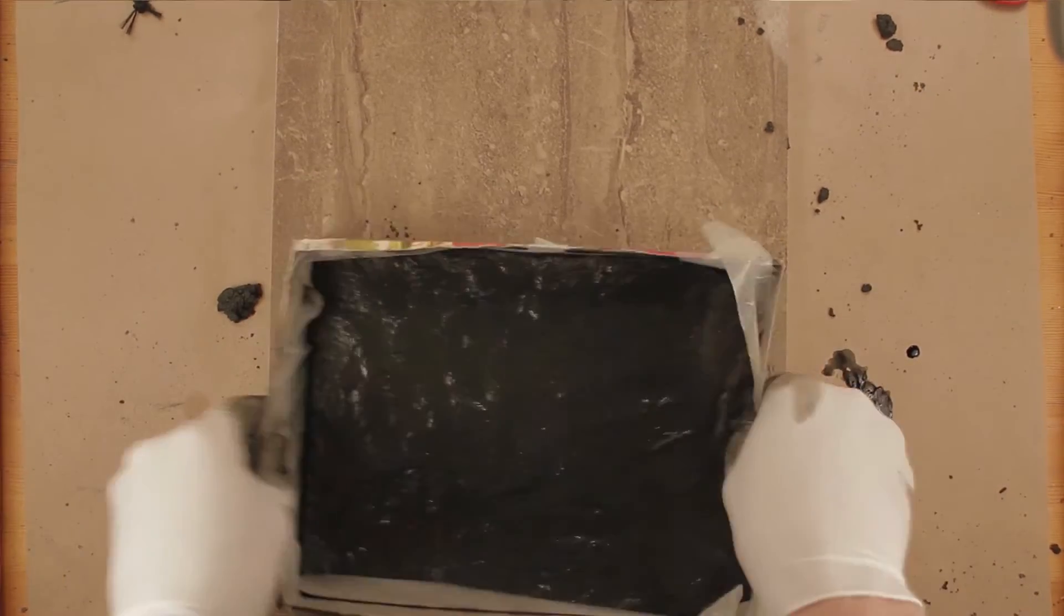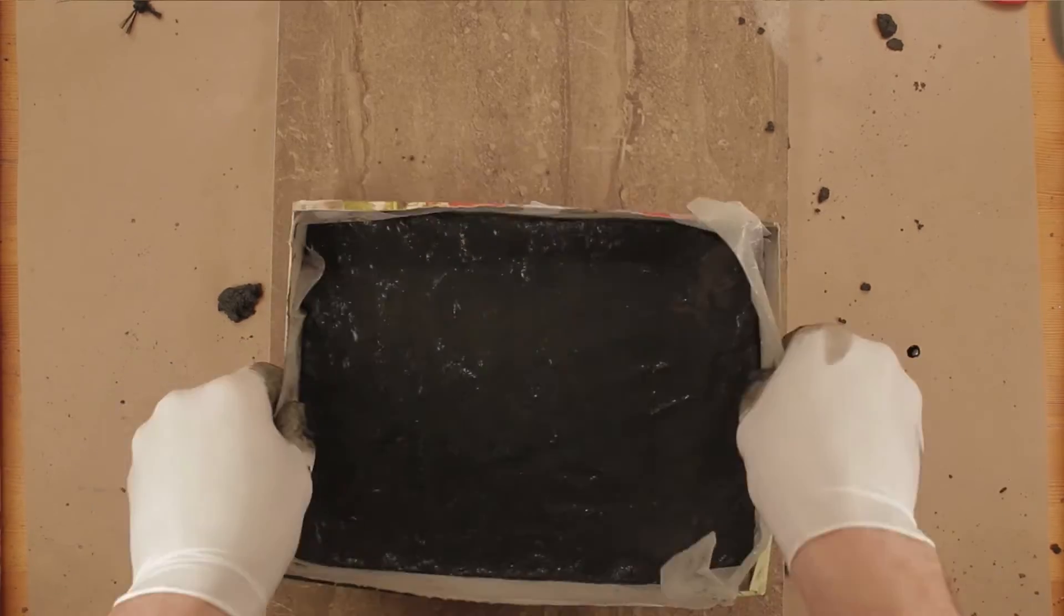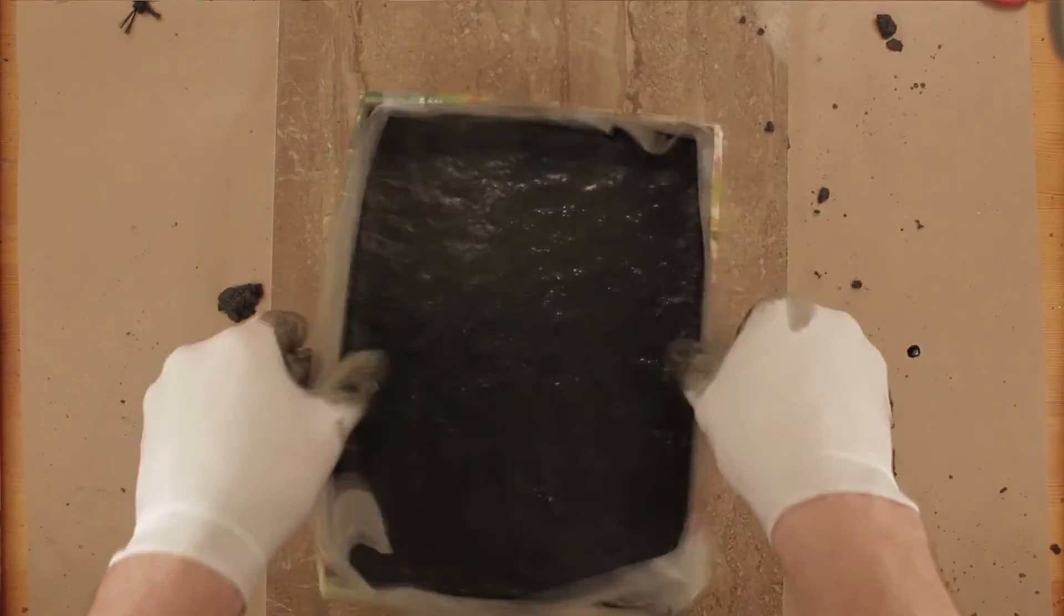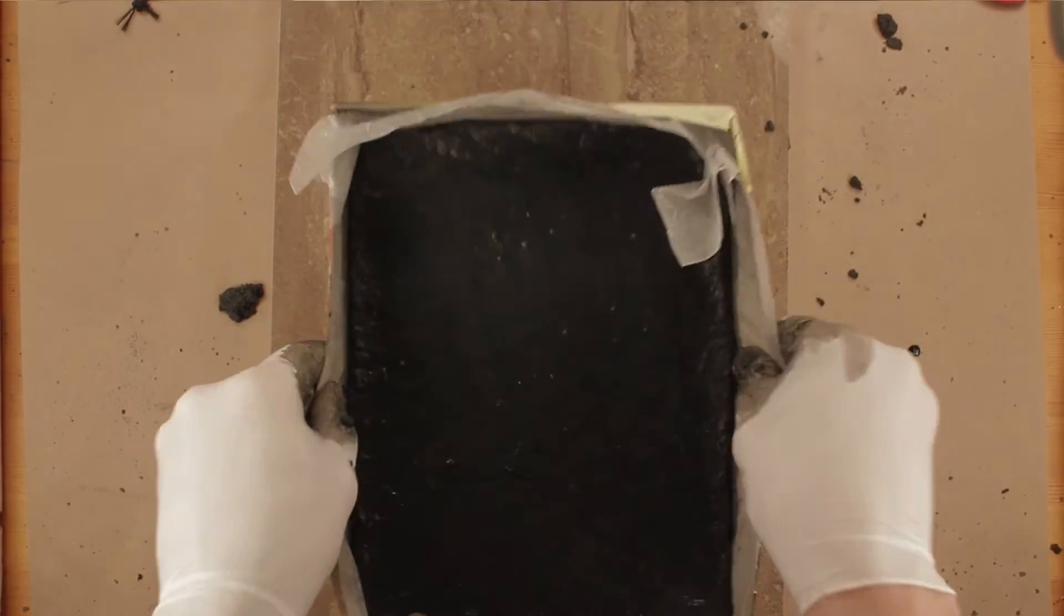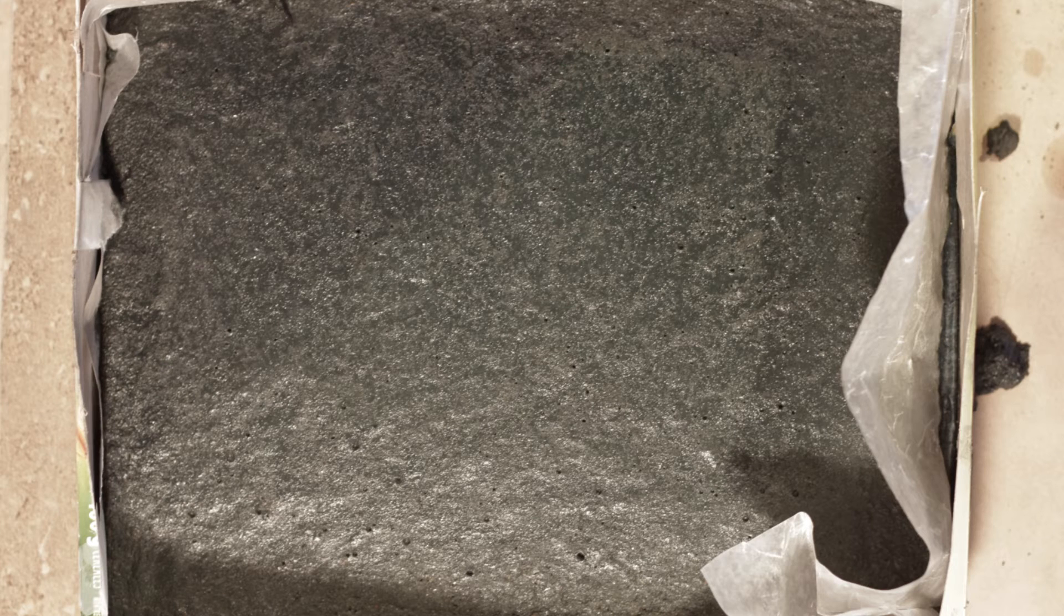At this point, you can also use a straight tool to level the top, but I didn't find this necessary as our working surface will be the bottom one. I waited a day before removing the concrete from the mold, and two more days before it was dry to the touch. In hindsight, I would advise polishing the surface when the concrete is still a little damp, as it's not as hard.